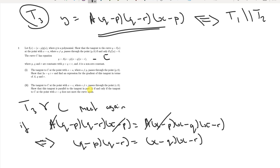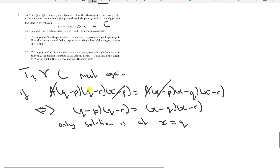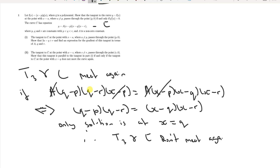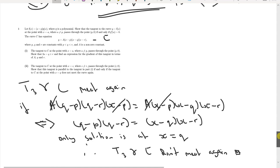Therefore T3 and the curve C meet only at x = q — there is only one solution — so T3 does not meet the curve again. That concludes the last part of question one. The second part was quite involved and long-winded, but if you break it down step by step, everything comes together.